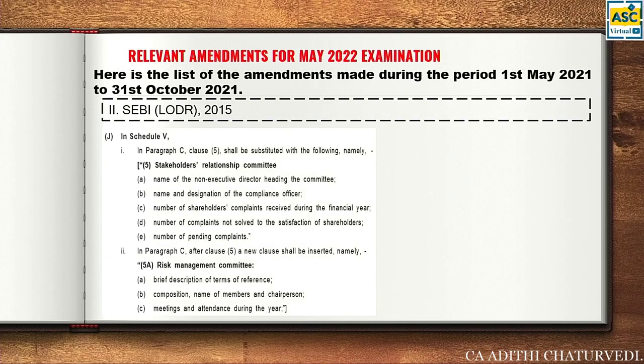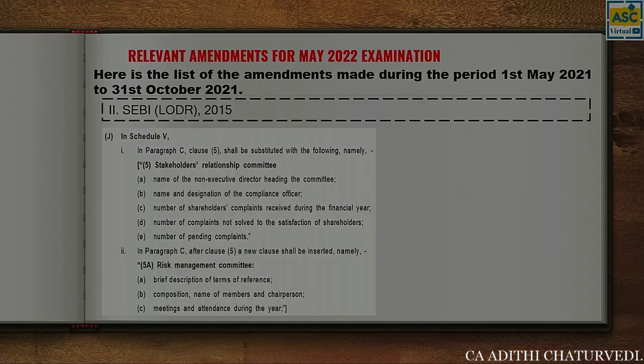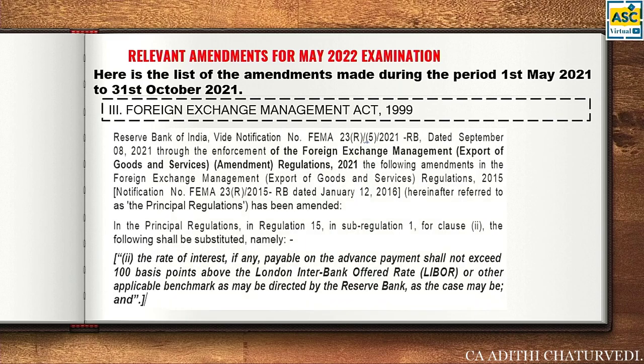In Schedule 5 of SEBI LODR, Paragraph C, Clause 5 shall be substituted. This new part relates to the Stakeholders Relationship Committee and Risk Management Committee — you have to give details of these in your board report.